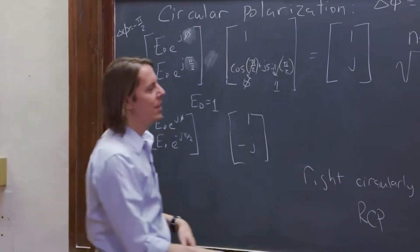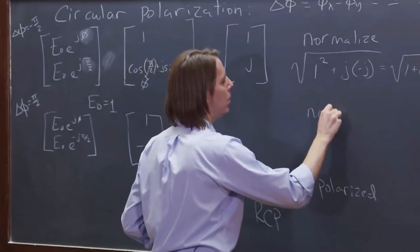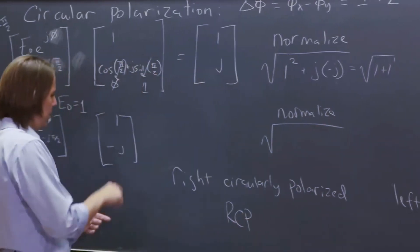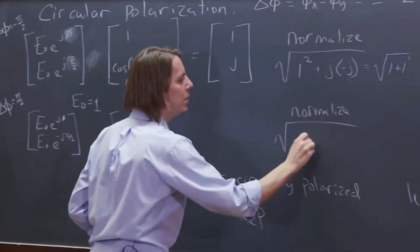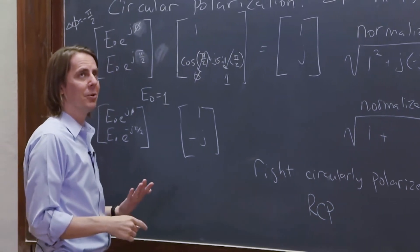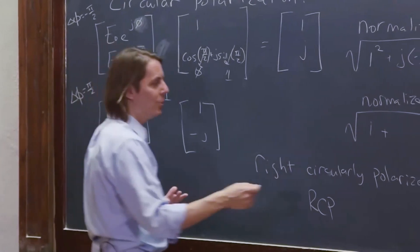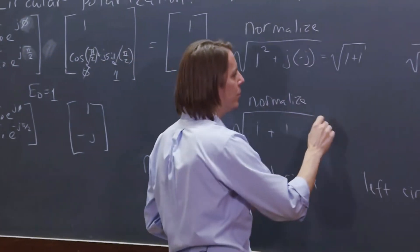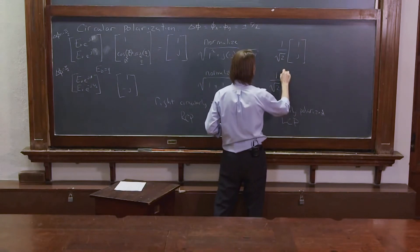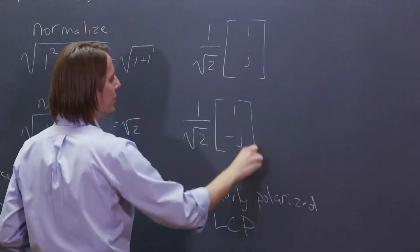So we have 1 over minus j. The normalization comes out the same: square root of 1 squared is 1 plus minus j times minus j - make it positive is plus j. j times minus j is minus 1, and minus 1 is 1, 1 plus 1 is 2, square root of 2. So this one is also 1 over the square root of 2, but it's 1 minus j, if you normalize it like that.